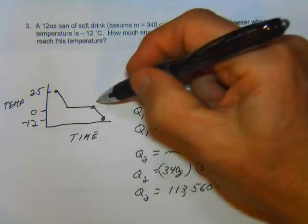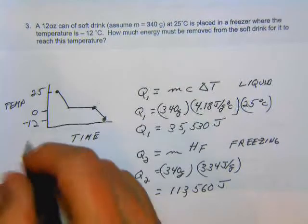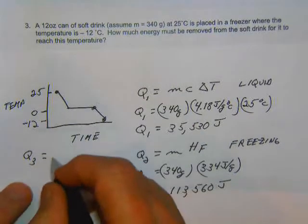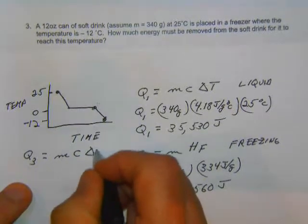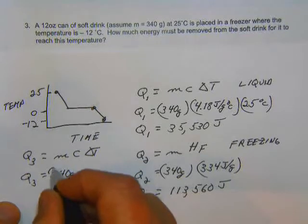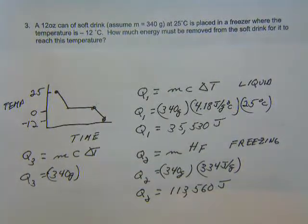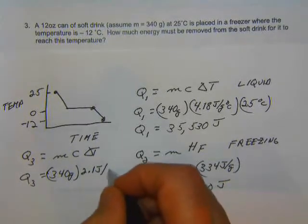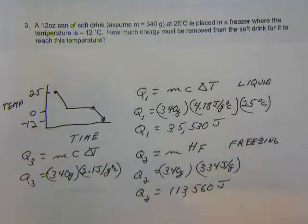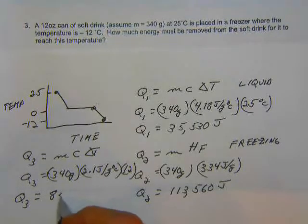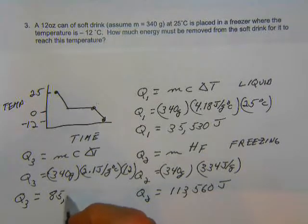The next step is to take it from zero to minus 12. We'll call that Q3. There's no phase change — this is a solid going down to minus 12 degrees, so we use MC·ΔT. Mass stays at 340 grams, C for solid water is 2.1 joules per gram degrees Celsius, and the change in temperature is 12 degrees. Q3 equals 8,568 joules.